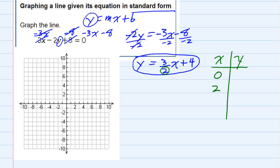That way when I plug them in, I won't have to worry about any fractions. So plugging in 0 gives me y equals three-halves times 0 plus 4, which simplifies to just 0 plus 4. Plugging in 0 gave me a y value of 4.